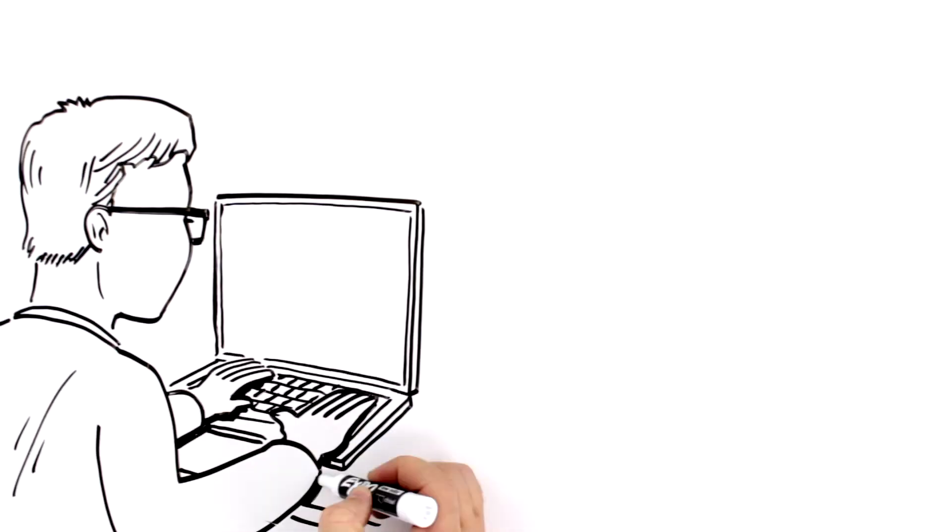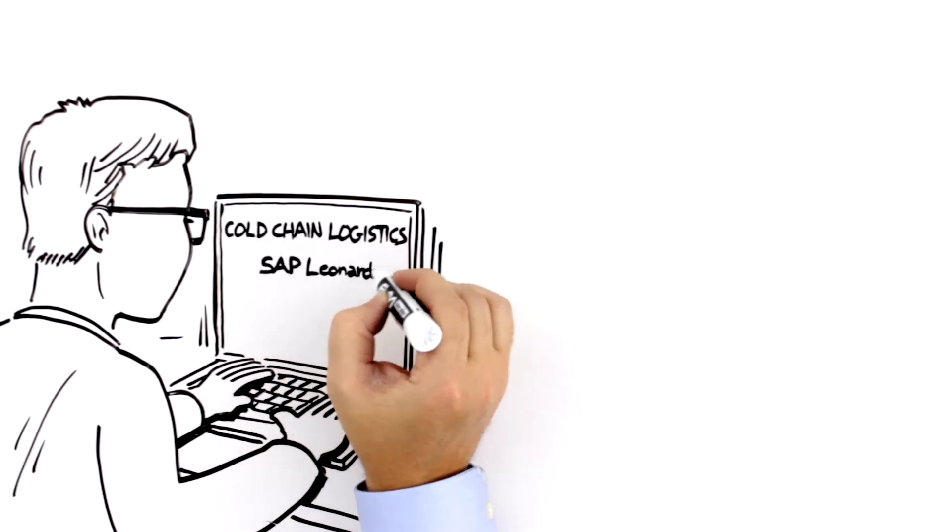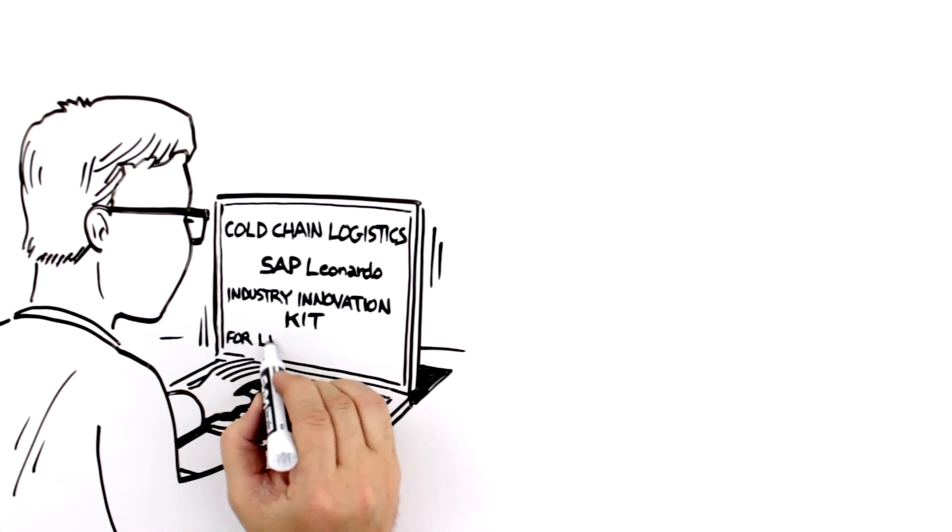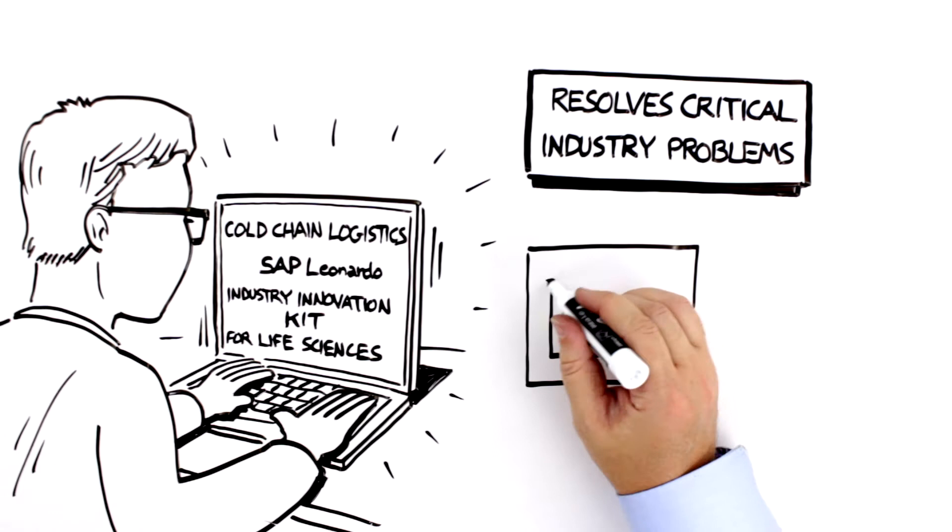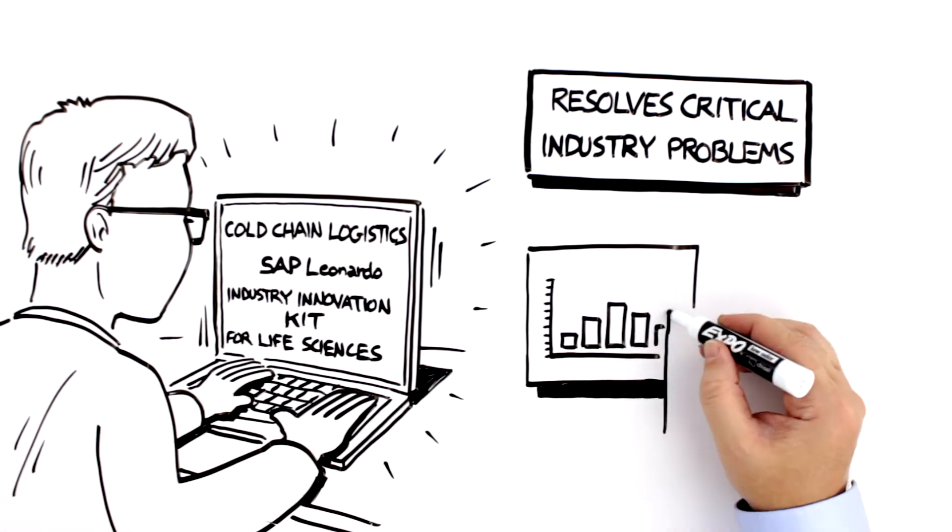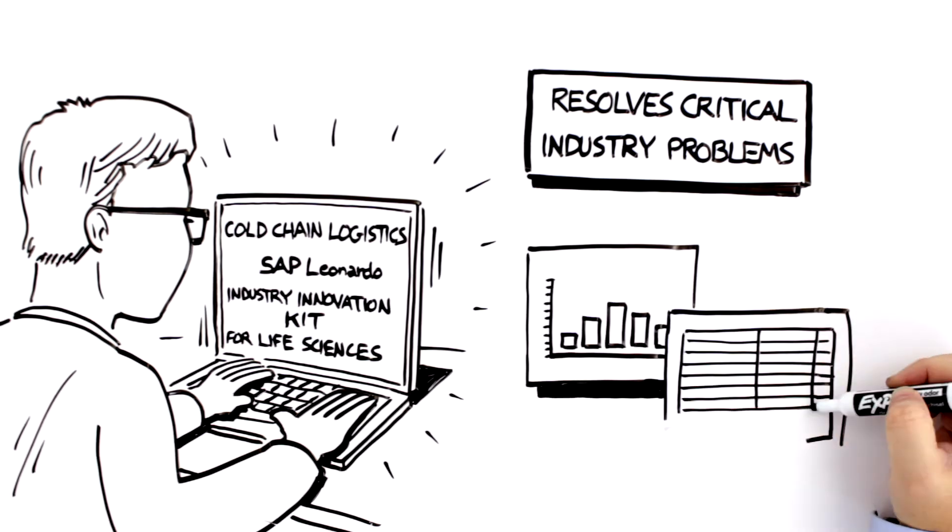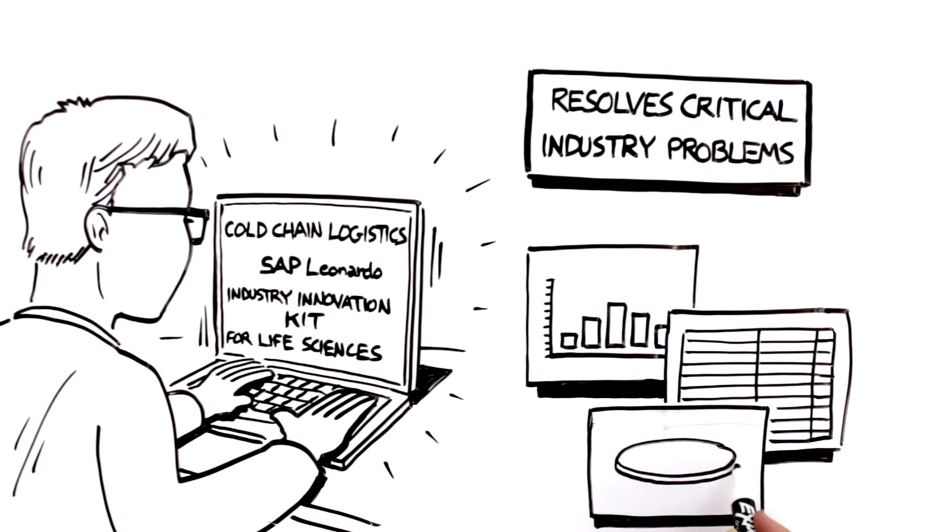The cold chain logistics option for the SAP Leonardo Industry Innovation Kit for Life Sciences is designed to help resolve critical industry problems with repeatable integrated capabilities and innovation services specifically developed for businesses in the life sciences industry.